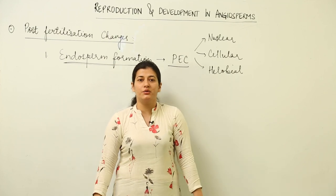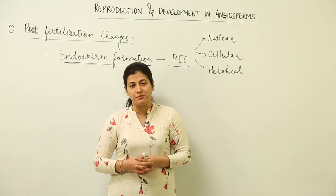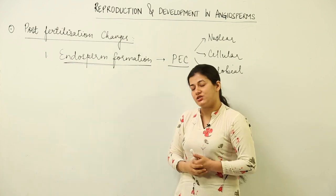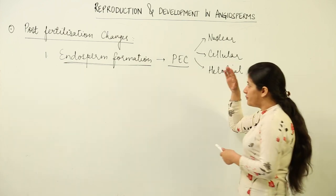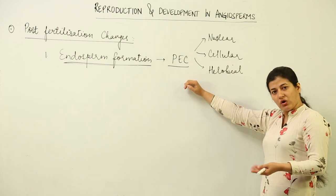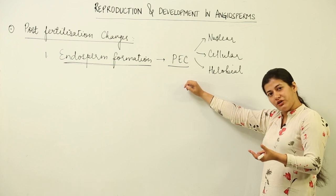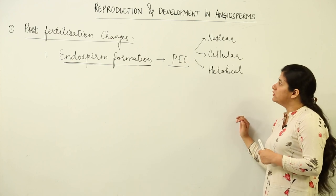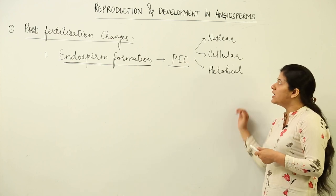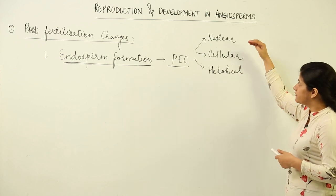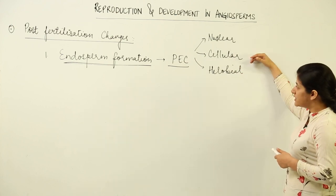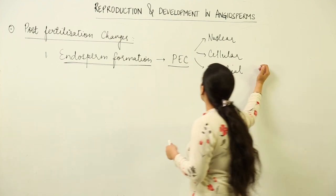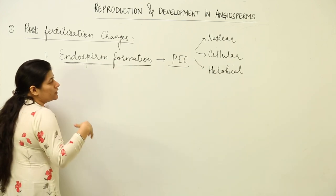Let us talk about endosperm development — how the formation of endosperm takes place once fertilization has taken place, or more specifically, when the primary endosperm cell has undergone fusion of the polar nuclei with the male gamete. The three different types of endosperm that can be formed are: first, nuclear; second, cellular; and third, helobial. We only talked about the names previously; now we will discuss the formation of each.